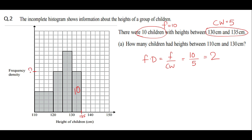Mark 2 on the y-axis. Now answering the main question: how many children had heights between 110 and 130 cm? The bars are all unequal in height and width. From 110 to 120, the class width is 10 and the height is 1, so frequency equals 1 times 10, giving 10 students.